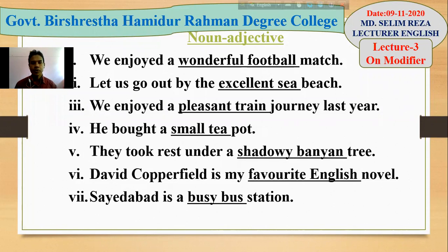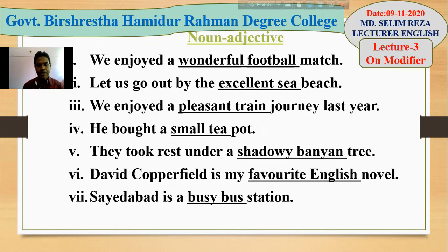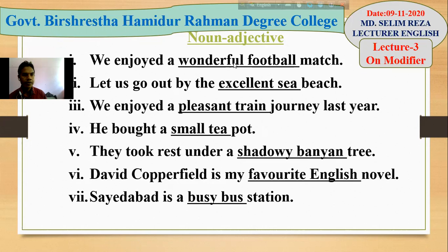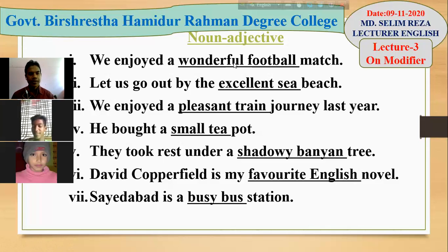Fourth example: 'He bought a small teapot.' Here we can't say 'he bought a small pot' or just 'he bought a teapot' — it doesn't give a complete meaning. So to express the complete meaning, we must use noun adjective: 'small tea' gives additional information about 'pot'. So it's a noun adjective used as premodifier.